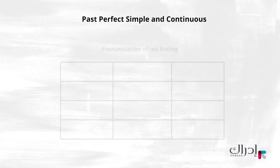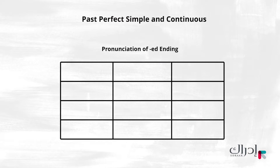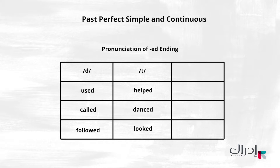Remember that some past participles are irregular, such as 'had gone' and 'had come'. Regular past participles have an -ed ending, but remember that the -ed ending can be pronounced as a 'da' sound, as in 'used', 'called', and 'followed'; a 'ta' sound, as in 'helped', 'danced', and 'looked'; or as 'ed', as in 'wanted' and 'needed'.